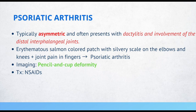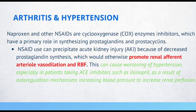Now let's discuss arthritis and hypertension. Naproxen and other NSAIDs are COX enzyme inhibitors, which have a primary role in synthesizing prostaglandins and prostacyclins. NSAID use can precipitate acute kidney injury because of decreased prostaglandin synthesis, which would otherwise promote renal afferent arterial vasodilation. This can cause worsening of hypertension, especially in patients taking ACE inhibitors such as lisinopril.